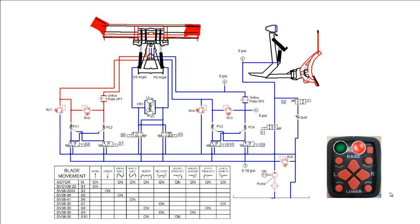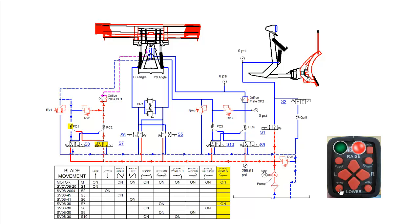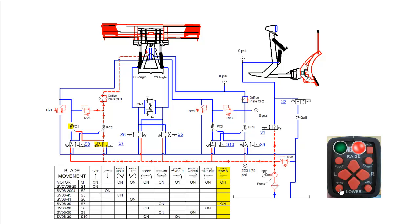We will now perform the left wing retract function. We begin by pushing the left wing button on the snowplow control. Hydraulic fluid from the pump flows through the shifted S7 cartridge, through PC2, applying pilot pressure to PC1, through the orifice plate, to the rod end of the left wing ram. The retracting ram pushes fluid through PC1, S8, and back to tank. When fully retracted, the pump pressure will build to the RV5 pump relief valve setting and directly back to tank.